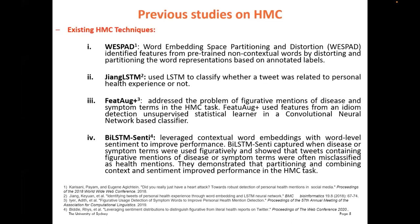There are mainly four health mention classification techniques. WESTPAD is word embedding space partitioning and distortion, which identifies features from pre-trained non-contextual word embeddings by distorting and partitioning the word representation based on annotated labels. Jiang LSTM used LSTM to classify whether a tweet was related to personal health experience. Feed augmentation addressed figurative mention using features from an idiom detection unsupervised statistical learner in a convolutional neural network classifier. Finally, BioLSTM Senti leveraged contextual word embedding with word-level sentiment to improve performance, showing that tweets with figurative mentions were often misclassified as health mentions.